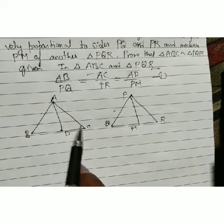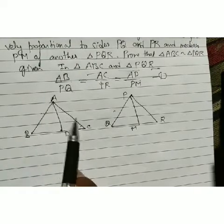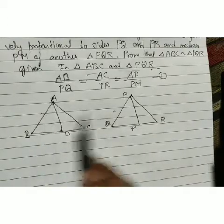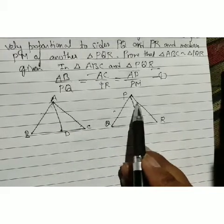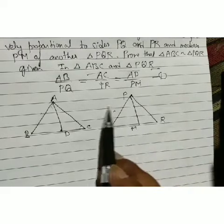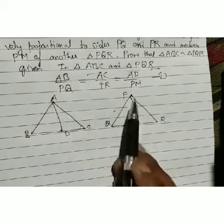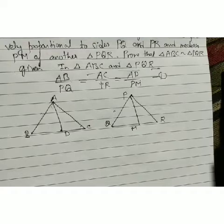We have two sides and a median in proportion. If we could show angle A equals angle P, then by SAS it would be easy. But that is not given directly, so we need to prove angle A = angle P. This requires a construction.